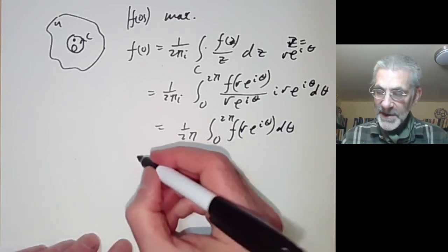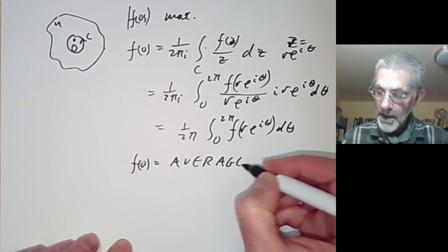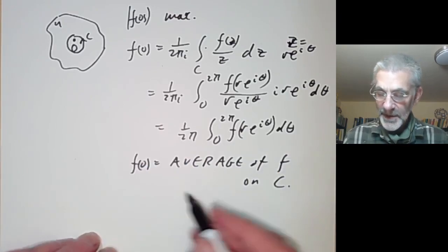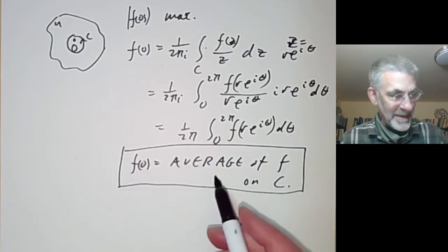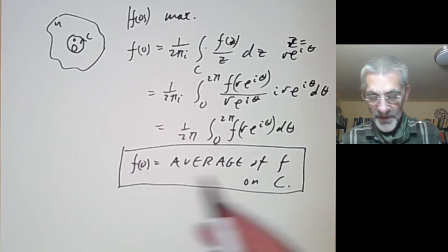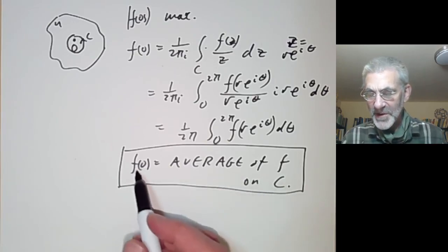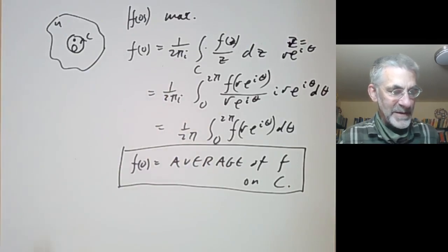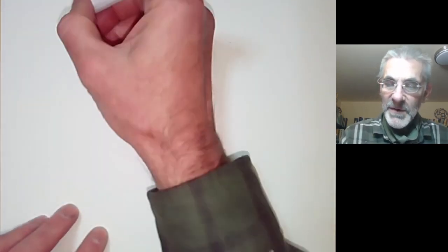This says that f(0) is the average of f on the circle c. This is actually almost another form of the maximum modulus principle — it says that functions are the averages of what they are nearby in some sense. Now we deduce the maximum modulus principle from this.